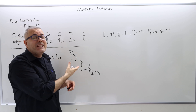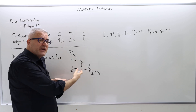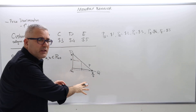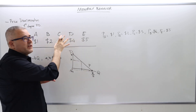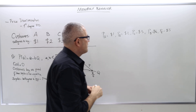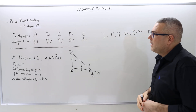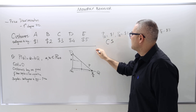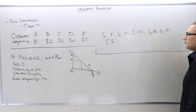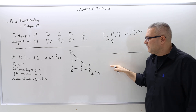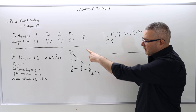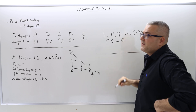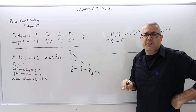So there are infinitely many customers and infinitely many prices — not so realistic, but that's why I also gave the discrete problem. The question now is: what is the consumer surplus? The consumer surplus will always be zero in first-degree price discrimination.